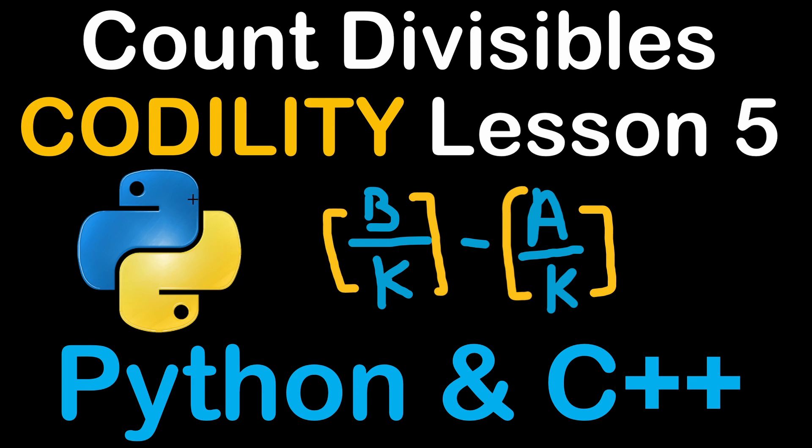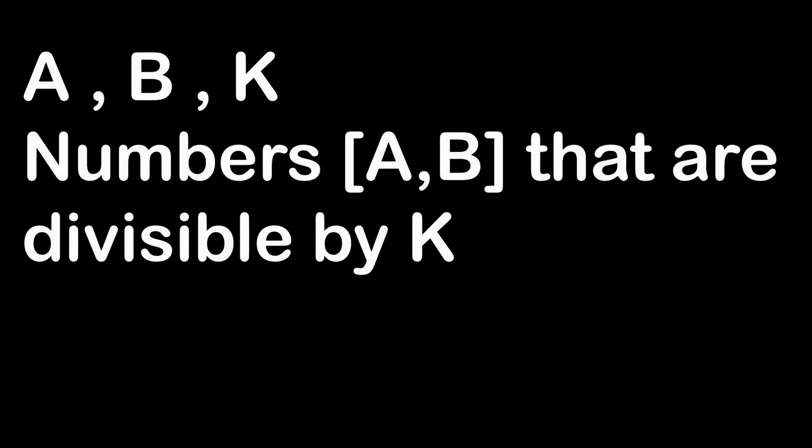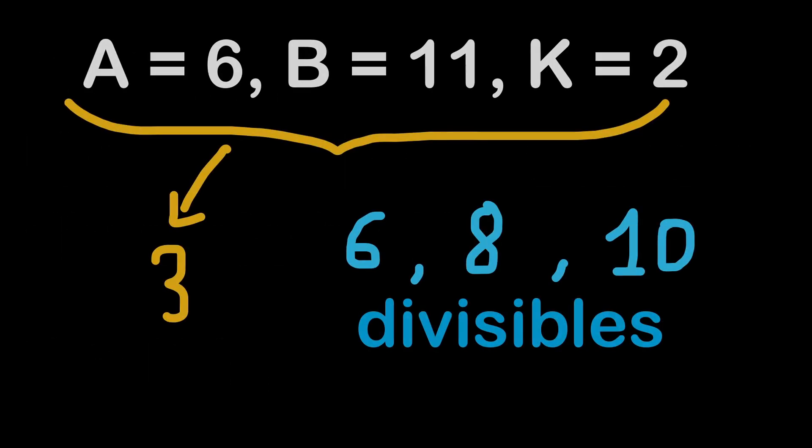So let's get started. We are given three numbers A, B, and K. And we have to find the numbers between A and B that are divisible by K. Obviously here K should be less than B in order to have at least one number that is divisible by K. And we are provided this example: A equal to 6, B equal 11, and K equal 2. And we have to count how many numbers between 6 and 11 are divisible by 2.